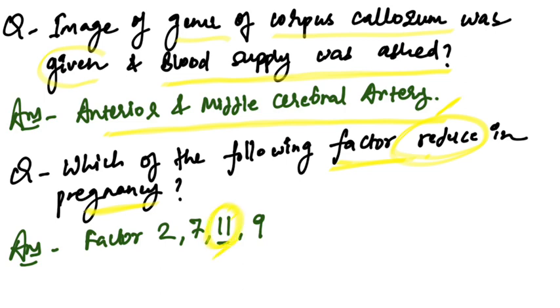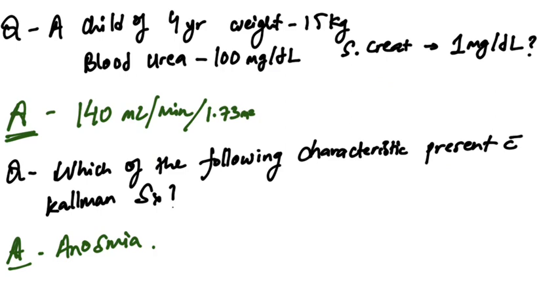A child of 4 years weighing 15 kg with blood urea of 100 mg/dL and serum creatinine of 1 mg/dL. Calculating the GFR, the answer is 140 mL/min/1.73m².